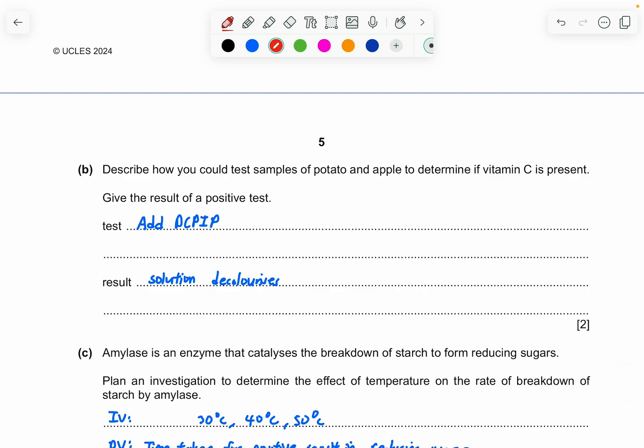Part B, describe how you could test samples of potato and apple to determine if vitamin C is present. Give the result a positive test. So if you memorize this, you have to memorize all of the tests, like reducing sugar, starch test, fat test, DCPIP is the vitamin C, and the protein test. So you add DCPIP, and what's the result? The solution will decolorize, or it becomes colorless.